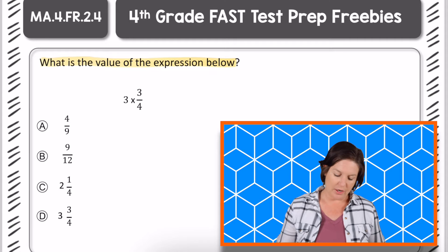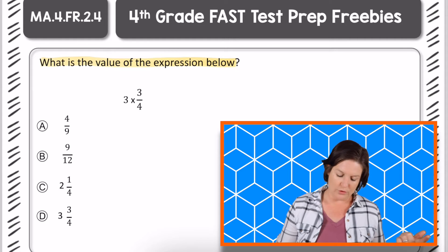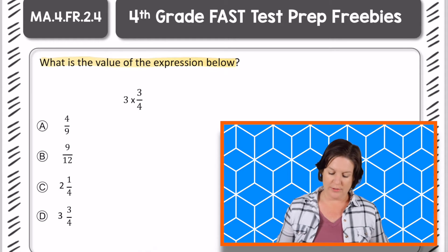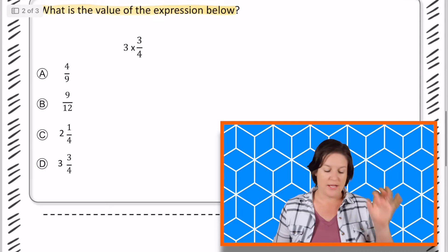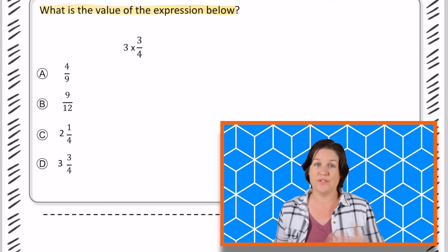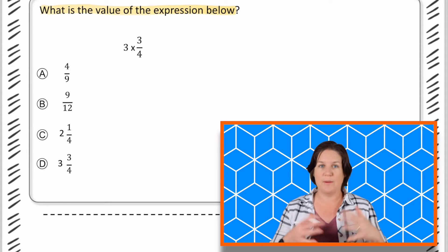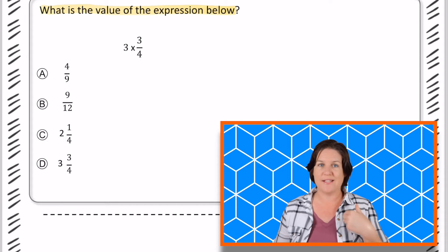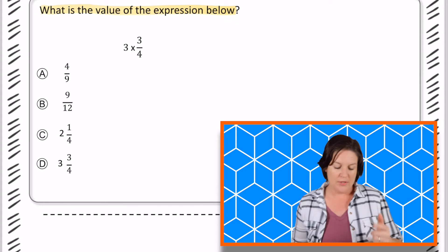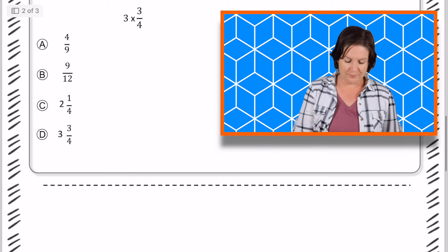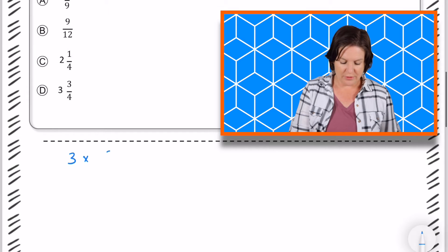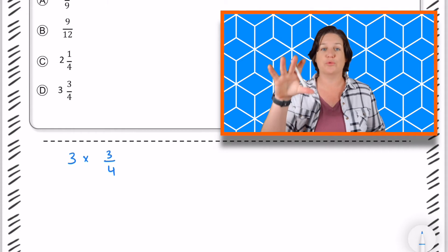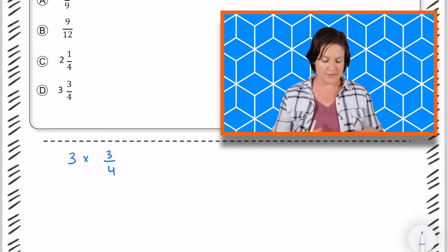Now I'm gonna go with the when in doubt draw it out strategy first, and then I'll show you also the standard algorithm that you can do. Depending, you may have solved it a different way, but I'm going to go ahead and show you two ways that I would suggest doing this. So I know that 3 times 3/4, when we're multiplying, we have groups of equal things.